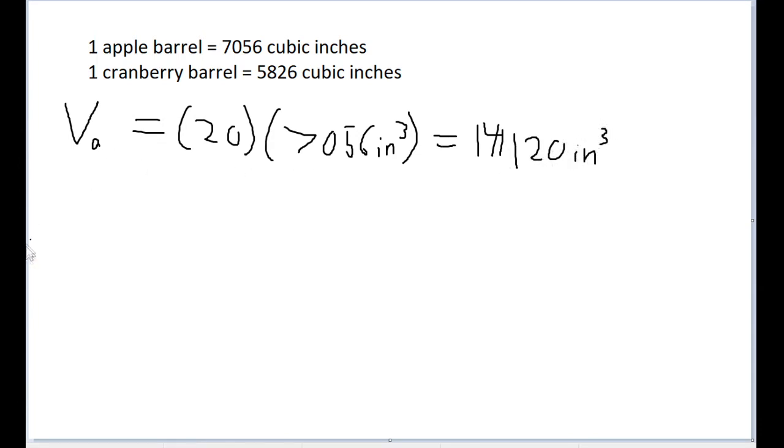And let's also solve for V sub C, the volume of 20 cranberry barrels, or again, 20 times 5,826 cubic inches. And plugging this into your calculator, this is equal to 116,520 cubic inches.